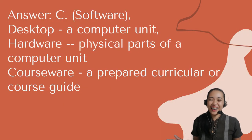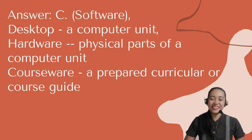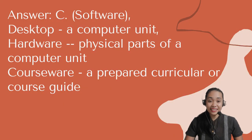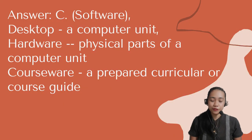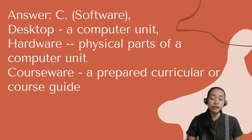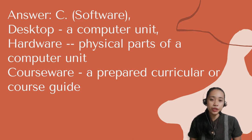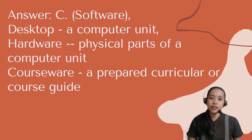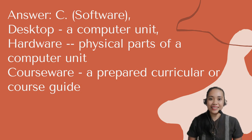The correct answer is letter C — Software. Desktop is a computer unit. Hardware is the physical part of a computer unit. Courseware is a prepared curricular or course guide.